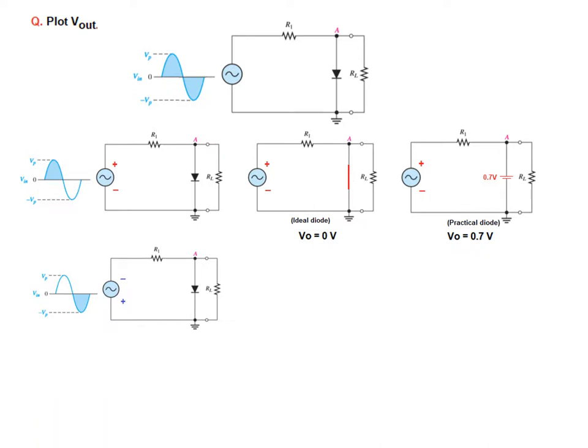Now let us talk of the negative half cycle, so negative at the top, positive at the bottom. Negative touching the positive terminal of the diode, that means it is making the diode reverse bias and for reverse bias it will be open circuit.